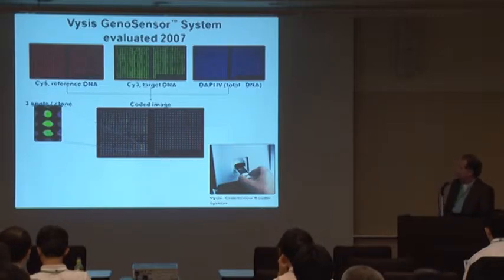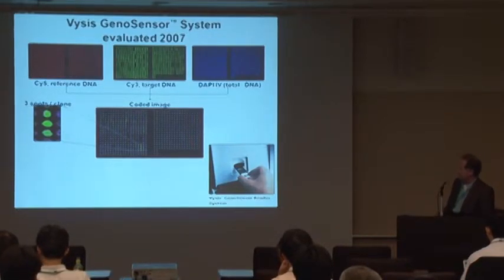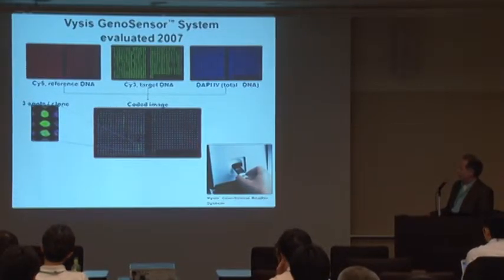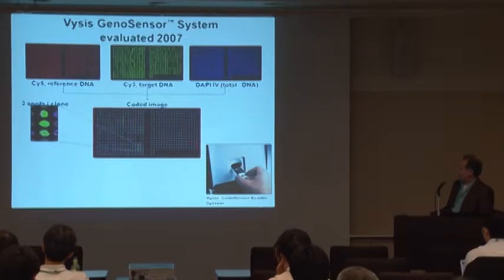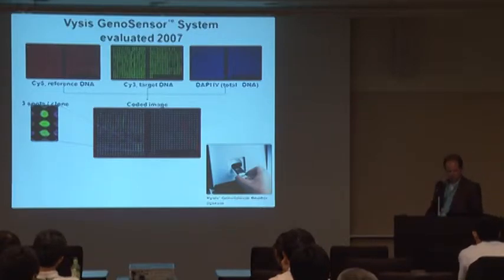So back in 2007 the first microarray platform we evaluated was the VYSIS GenoSensor. I don't know if it's in use clinically or not but it worked okay. The big problem with this platform was that you had to put a cover slip on this tiny little area there that was just slightly bigger than the cover slip. If you didn't lay it on there flat it would scratch the surface and ruin your data. So that really didn't seem like a good idea for us.